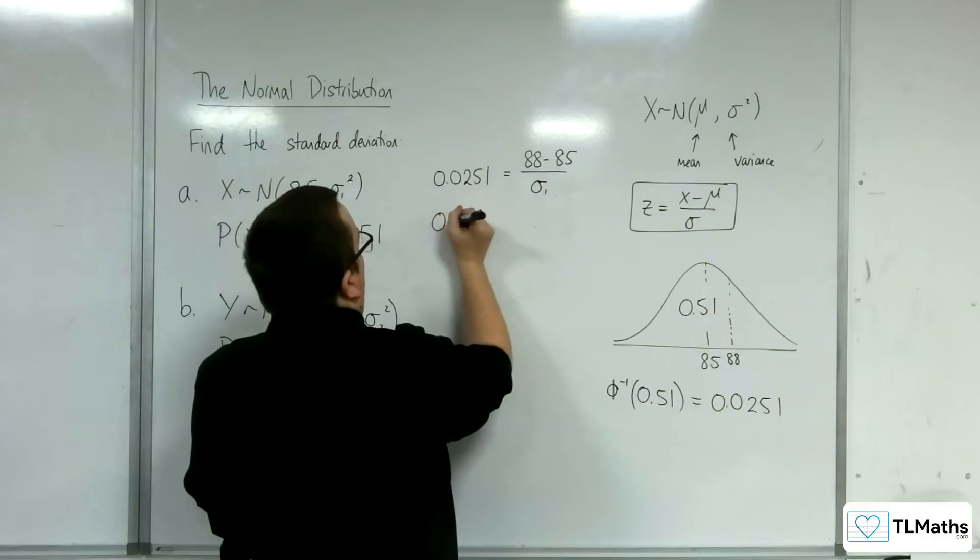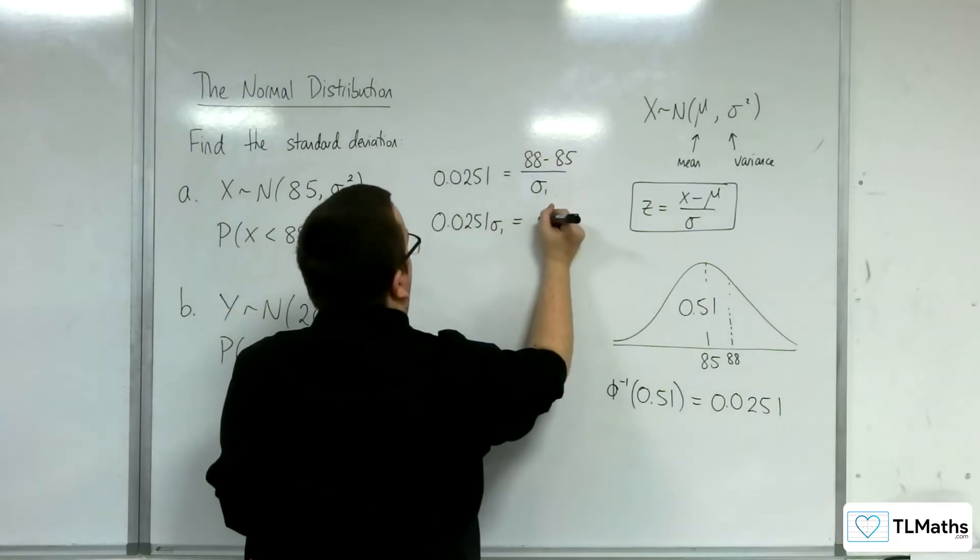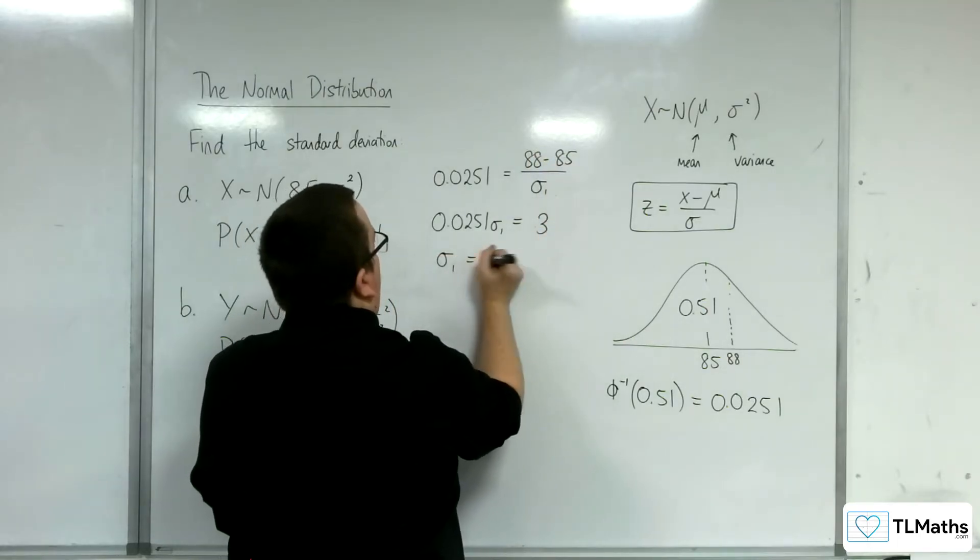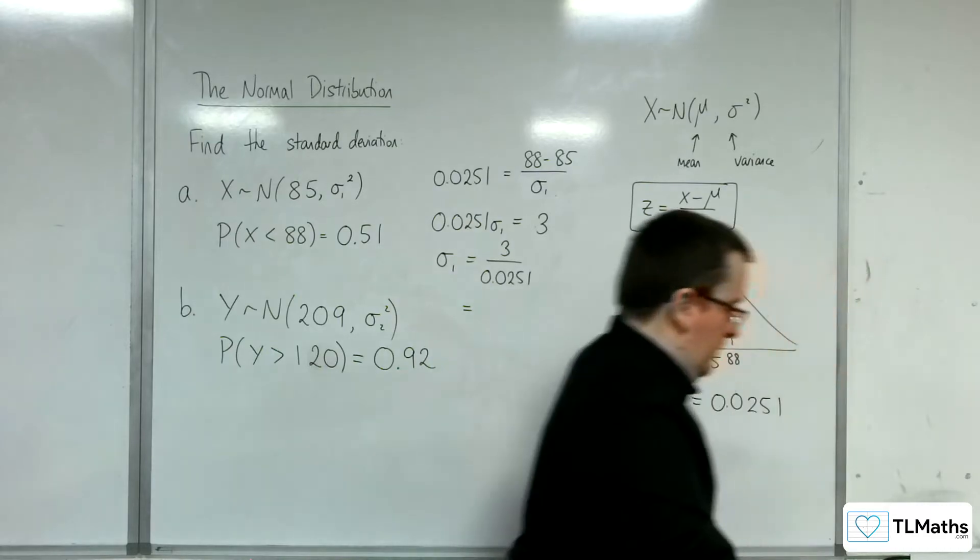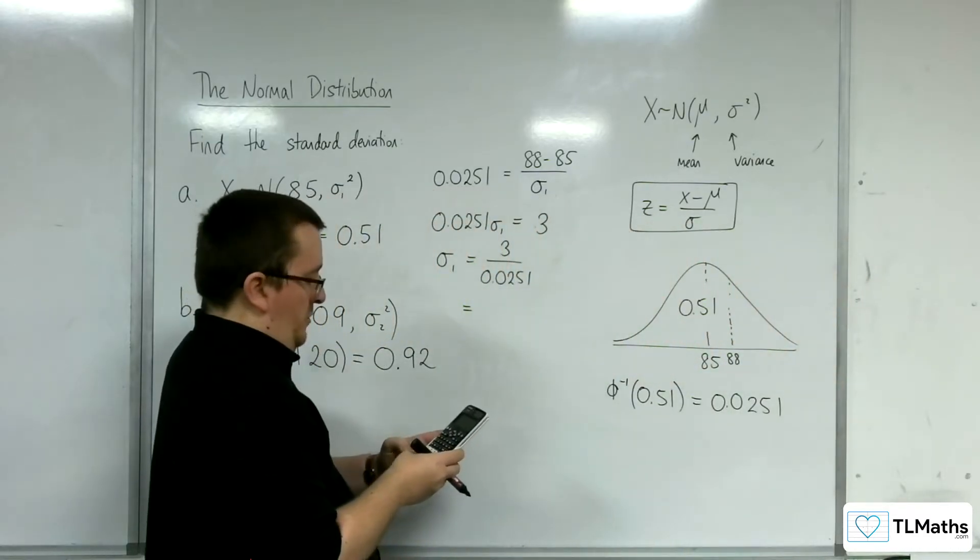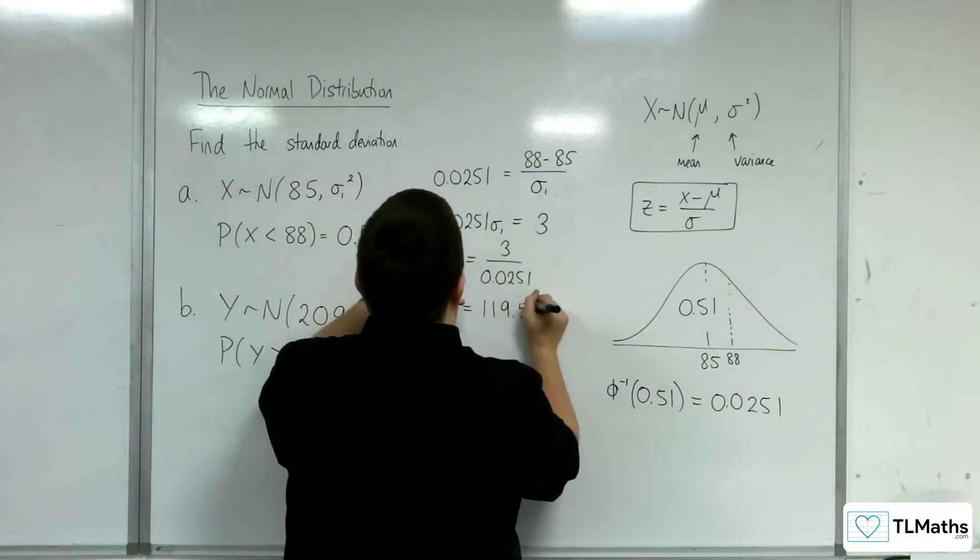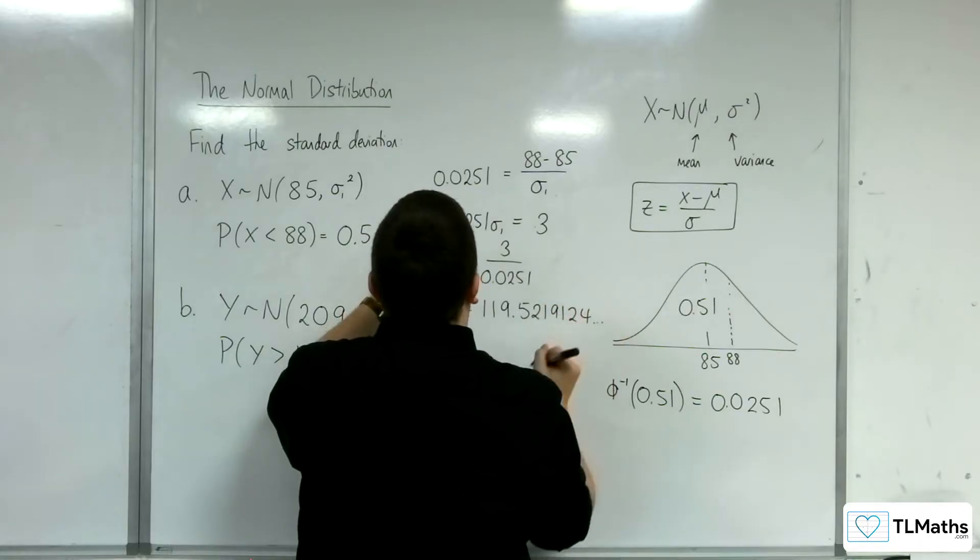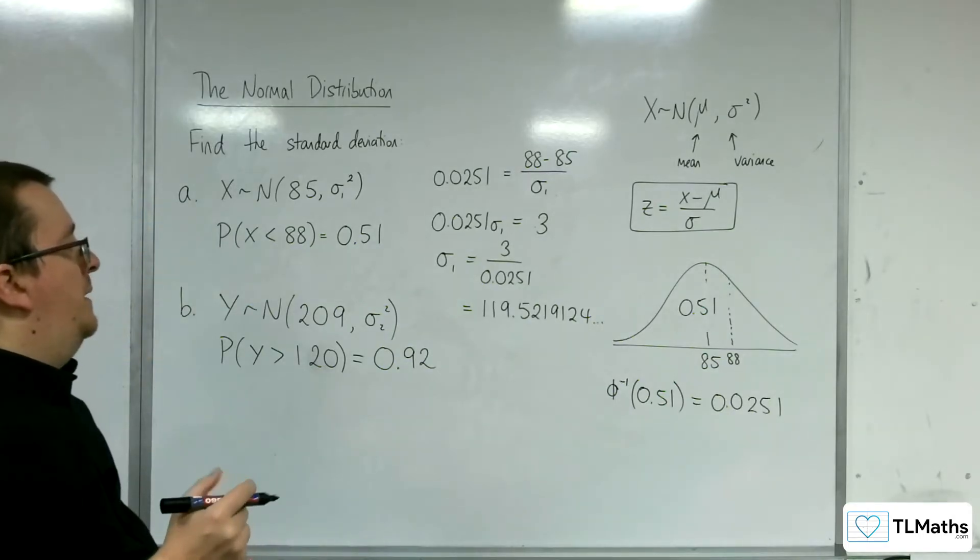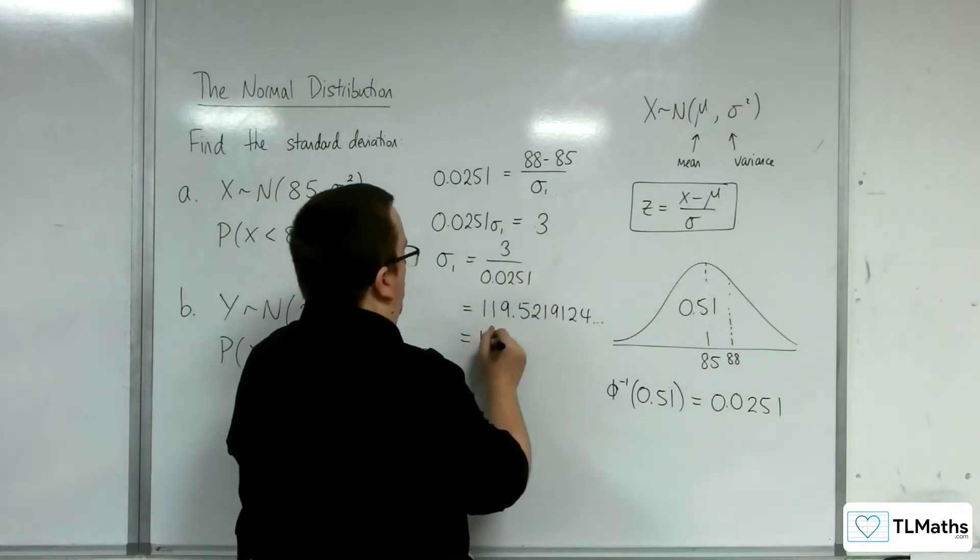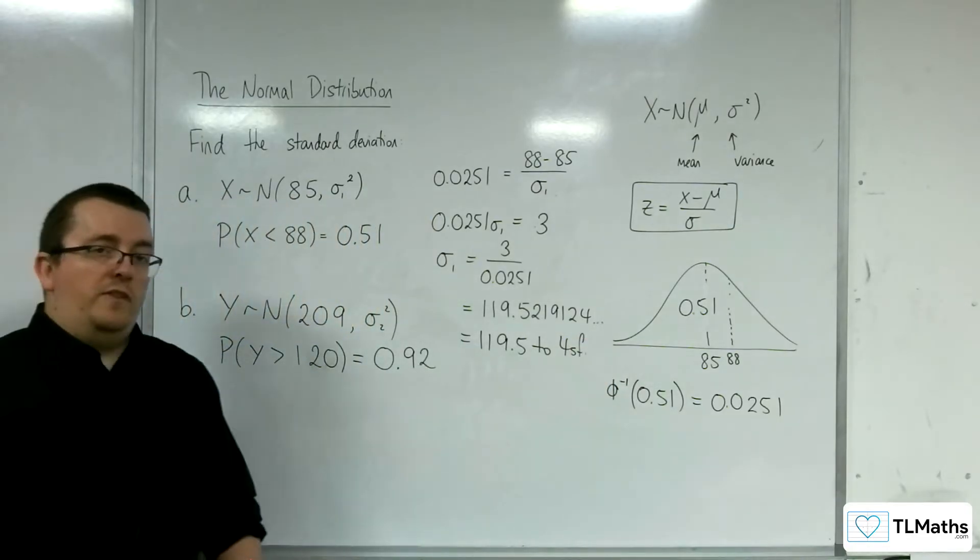I'm going to need to multiply up by sigma 1. 88 take away 85, I already know that's 3. So sigma 1 is 3 divided by 0.0251. 3 divided by 0.0251 is 119.5219124. So that must be the standard deviation. This is 119.524 to 4 significant figures. That's the answer to part A.